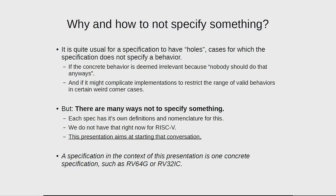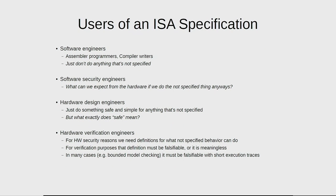In RISC-V right now we have a couple of places where we leave things out in our specification, but we don't explicitly say what that means — what can happen if someone still does the thing the spec says you're not supposed to do. To understand my position on this, it's good to first look at the users of a specification.